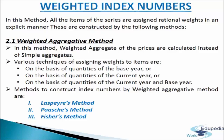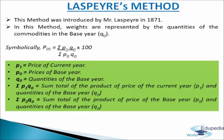Some important methods of constructing Weighted Aggregative Indices are: Laspeyres' method, Paasche's method, Fisher's Ideal method, Dorbish and Bowley's method, Marshall-Edgeworth method, Walsh method, and Kelly's method. However, considering the scope of the Class 11 syllabus, we will discuss only the first three methods: Laspeyres' method, Paasche's method, and Fisher's Ideal method.